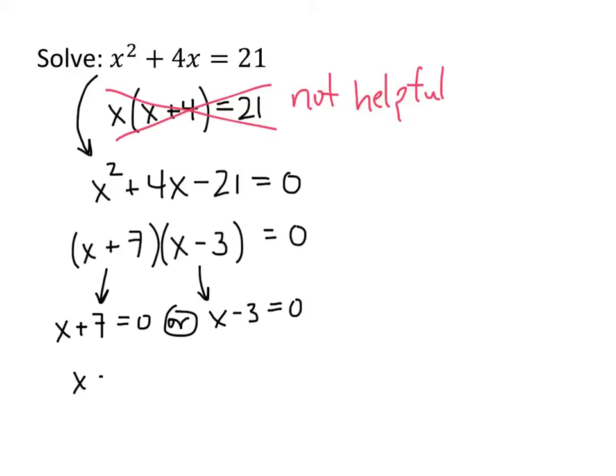So that means that either x equals negative 7 or x equals positive 3. And those are my two solutions to this equation.